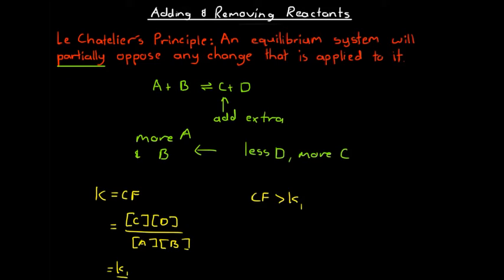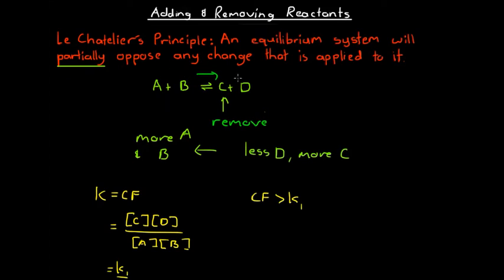It's also important to be aware that if we remove some of substance C, the system can oppose this change. If we decrease the amount of substance C, the system would oppose this by producing some extra C to replace what was taken away, and so we'd see a net forward reaction. This is a very useful way to ensure that we use up all of our reactants — by removing our products from the reaction. If we're removing C and D, then A and B will keep being used up until they're all gone.